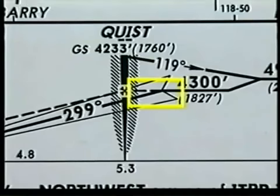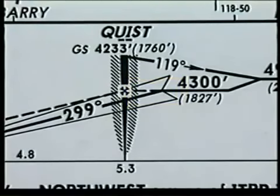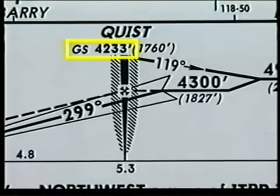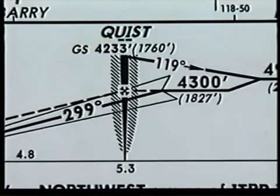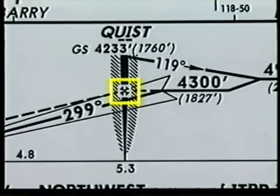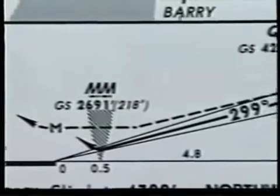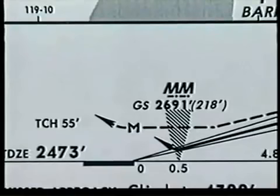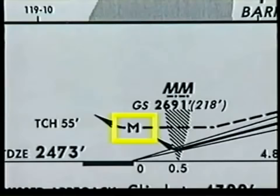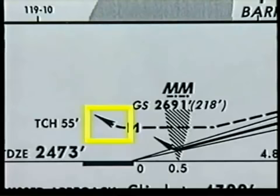On an ILS approach, the point where the solid line begins to descend represents the point where you'll intercept the glide slope when you're at the minimum glide slope intercept altitude. For a precision approach, this is the final approach fix, or FAF, and the beginning of the final approach segment. The notation GS4233 represents your altitude when you are on the glide slope as you pass Quist. For the localizer, glide slope out, or non-precision approach, however, you cannot begin your descent from 4,300 feet until you reach the final approach fix, which is indicated by the Maltese cross symbol. For this localizer-only approach, the dashed flight path indicates a descent from Quist to the minimum descent altitude. The flight track continues level at the MDA to the missed approach point, or MAP, identified by the letter M on later edition charts. The track then turns sharply upward, ending with an arrowhead, showing the beginning of the missed approach procedure in the event of an unsuccessful approach.